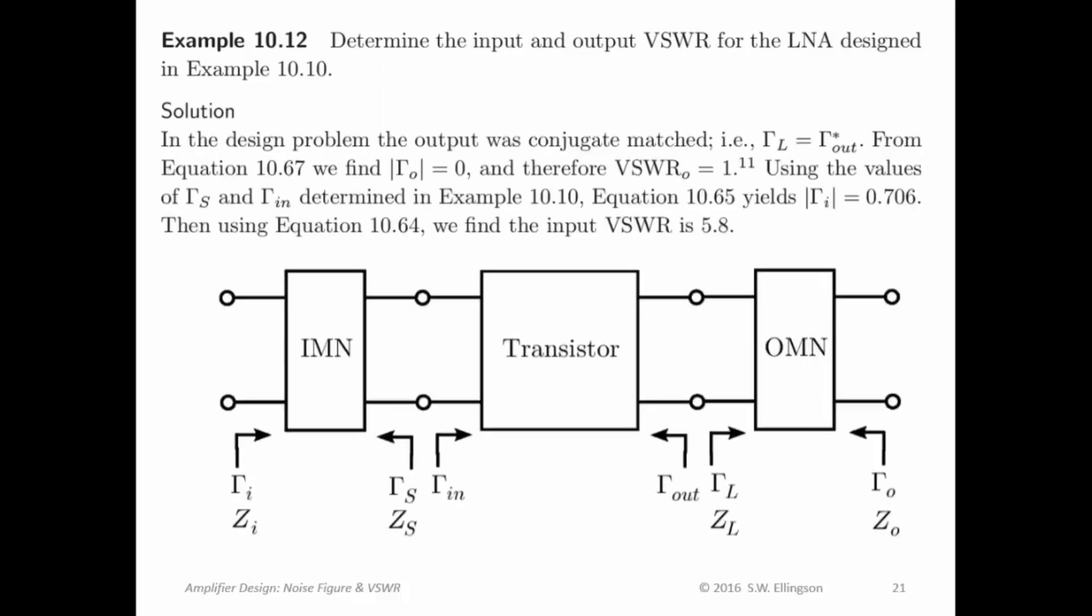In this example, we're going to determine the input and output VSWR for the LNA that we designed in the first example here. In other words, the example where we've tried to minimize the noise figure. So, said differently, what is the input and output VSWR for the LNA that we designed where we minimize the noise figure?